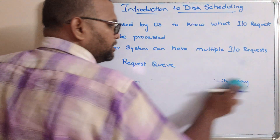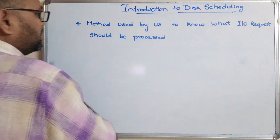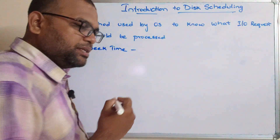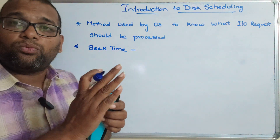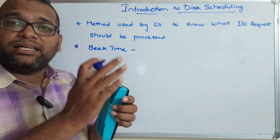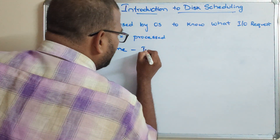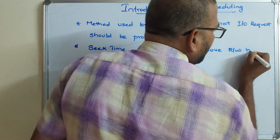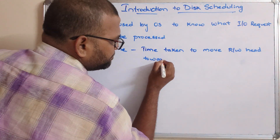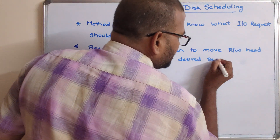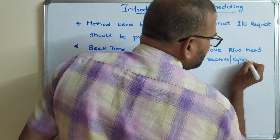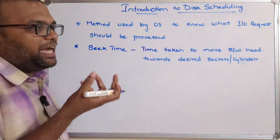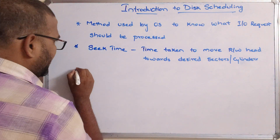The first very important term for disk scheduling is seek time. We know that the read-write head moves forward and backward in order to access data on sectors. Seek time is the time taken to move the read-write head towards the desired sectors or cylinders. Cylinders means a group of tracks on every platter. So seek time is the time taken to move the read-write head to the desired location.